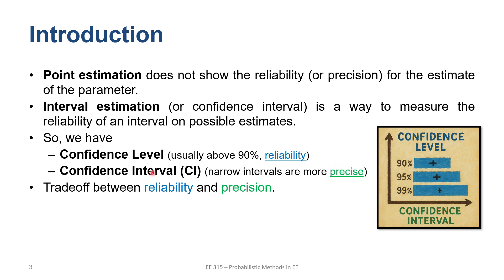If the interval is smaller or narrower, we have more precision, but there is a trade-off between reliability and precision. If you estimate the weight to be in a bigger range, you have a better chance of being reliable. If you make the interval smaller, you might make mistakes and lose some precision.